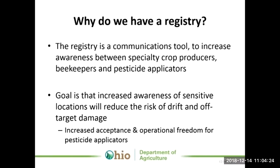Why do we even need a registry like this? For the past few years, there's been a lot of discussion about the new dicamba herbicide products and the new 2,4-D dual products that have been coming online. We knew these products were on the horizon. There were a lot of concerns amongst grape growers and tomato growers in particular about the volatility of these products. Some of these new products would change the traditional timing of applications, and maybe their fruits would be more susceptible while in bloom to these herbicides. Some of these have traditionally been very volatile formulas, so there was a lot of concern about increased damage from the use of these new products.